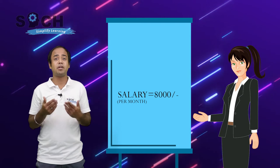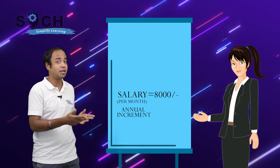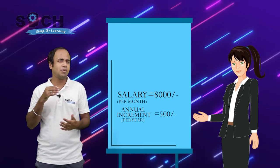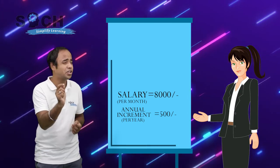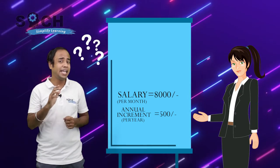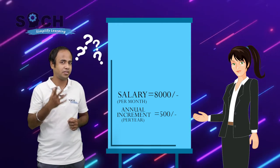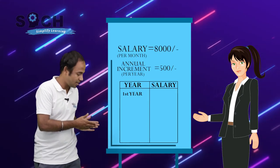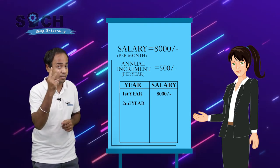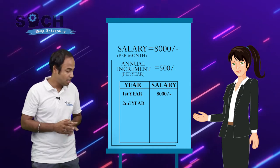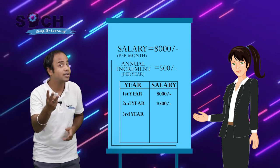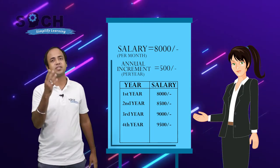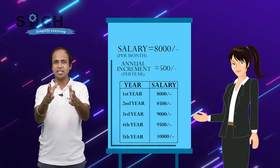At the same time, depending upon her performance, the annual increment — the increment per year — will be equal to Rs. 500 per month. So I ask you a simple question: what will be her incremented payment at the end of the 5th year? In the 1st year, Rina's payment was Rs. 8,000. In the 2nd year, it increments by Rs. 500, becoming Rs. 8,500. 3rd year: Rs. 9,000. 4th year: Rs. 9,500. 5th year: Rs. 10,000.